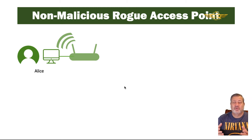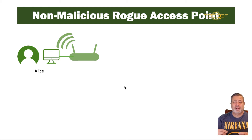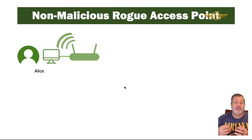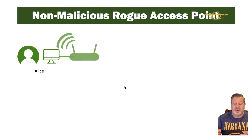Maybe they're adding additional computers and there's no ports available, or maybe they're extending the range of it. In any case, it's a user who's not malicious, that's trying to extend the capabilities of the network, and they connect an access point — an unauthorized access point — without the intent of being malicious, but obviously this causes risks to our network.